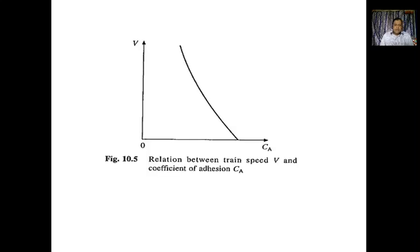The relation between train speed V and coefficient of adhesion Ca is shown as a slanting line. Whenever mud, snow, oil, or grease is found on the wheel, the coefficient of adhesion decreases, and therefore the point Ca shown on the graph will also reduce — the curve shifts towards the left.